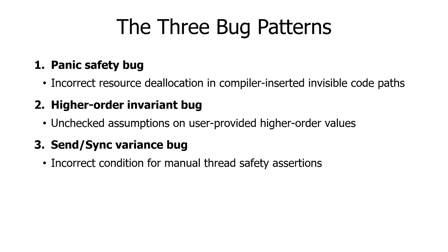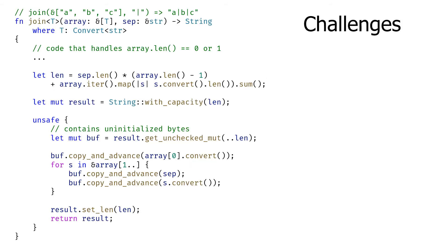To summarize, these are the three bugs that we identified as common in unsafe Rust: panic safety bug, higher-order invariant bug, and send-sync variance bug. Let's go back to the bug example for the higher-order invariant bug. This example shows a few challenges to detect such types of bugs. The first difficulty is incomplete definitions. We need to detect bugs in this function without knowing a concrete type T and its corresponding convert implementation. The bug detector must be able to make assumptions on such holes to find bugs in this function.